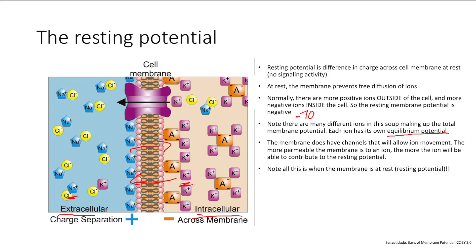The membrane does have channels that allow ion movement, and the more permeable the membrane is to an ion, the more that ion will be able to contribute to the resting potential. The main two ions contributing at rest are sodium and potassium — the rest of the ions don't move around too much at rest.